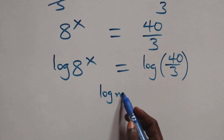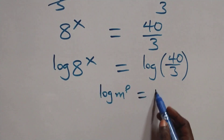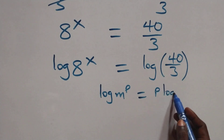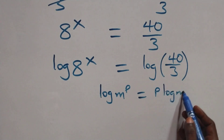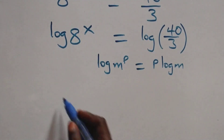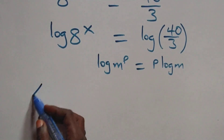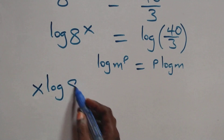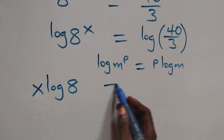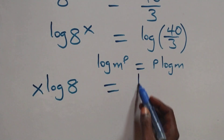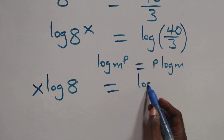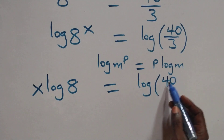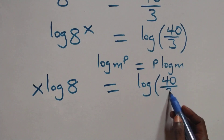this is the same thing as p log m. That is, all we have here becomes x log 8 equals to log 40 over 3.